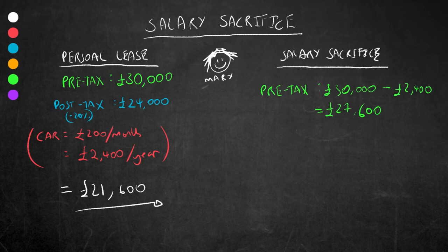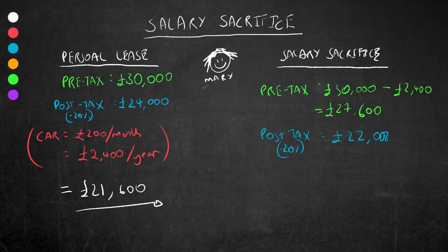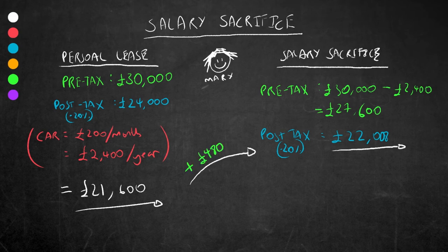Using a similar tax rate as before, 20%, Mary pays her tax and her post-tax income is now £22,080. Now this is £480 more than what she would have had under the traditional example.